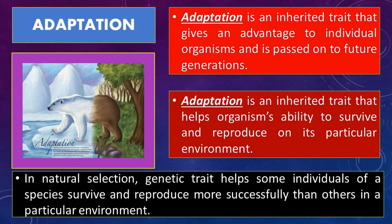Number eight, adaptation. Adaptation is an inherited trait that gives an advantage to individual organisms and is passed on to future generations. It is an inherited trait that helps an organism's ability to survive and reproduce in its particular environment. In natural selection, genetic traits help some individuals of a species survive and reproduce more successfully than others in a particular environment.